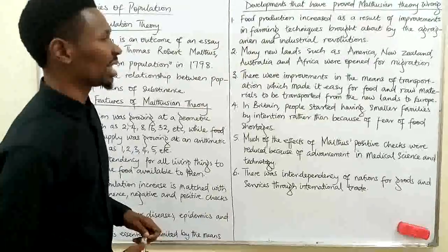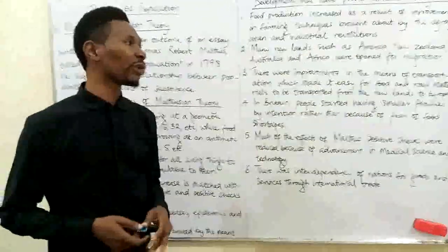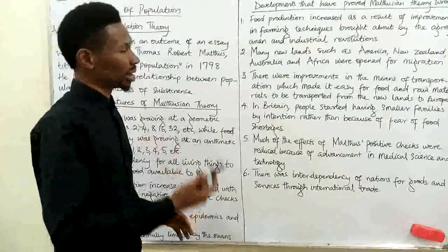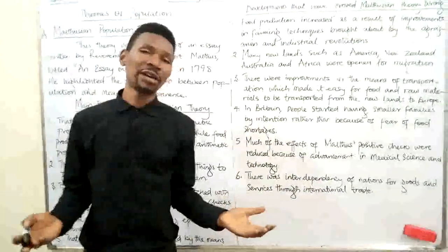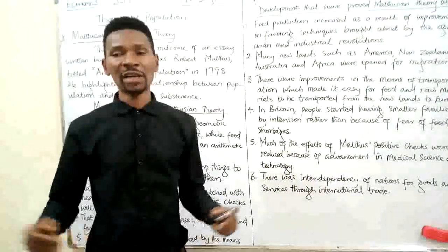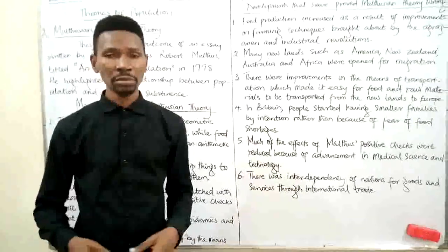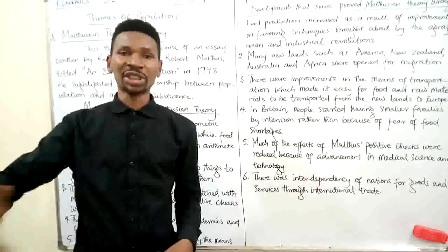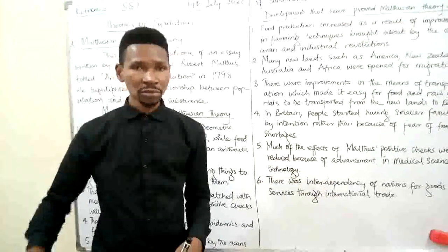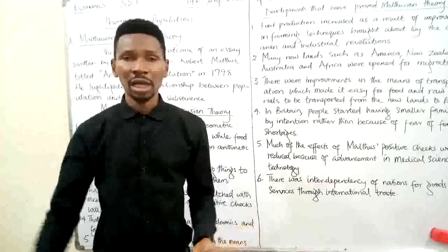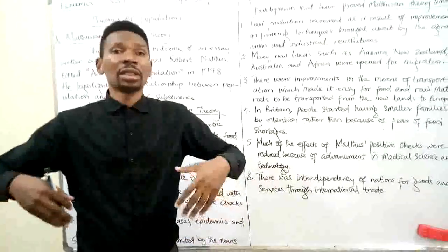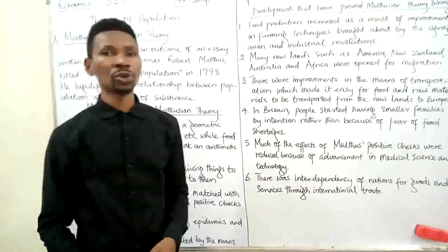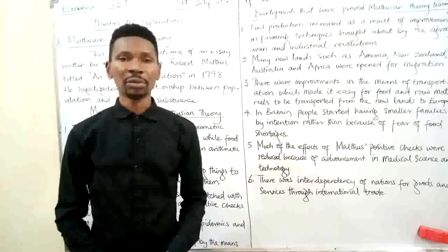Number three, there were improvements in the means of transportation, which made it easy for food and raw materials to be transported from the new lands that were discovered to Europe. In the colonial era, the colonial masters or Europeans used to take natural resources back to Europe, such as oil palm, timber, and a lot of natural resources, which they transported back to Europe to sustain the population there.